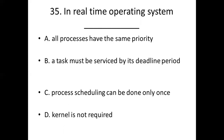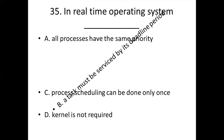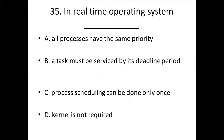Thirty-fifth bit. In a real-time operating system, Option A: All processes have the same priority. Option B: A task must be serviced by its deadline period. Option C: Process scheduling can be done only once. Option D: Kernel is not required. Answer: Option B, a task must be serviced by its deadline period.